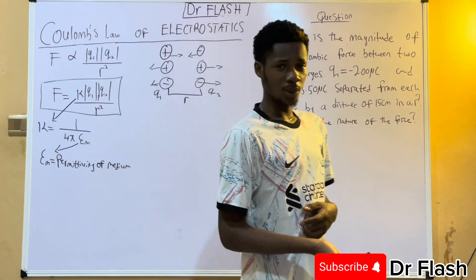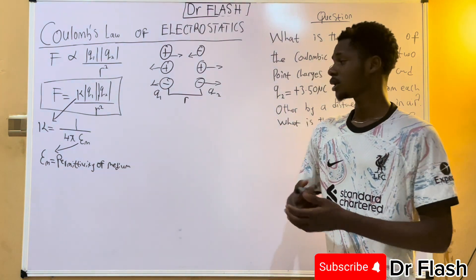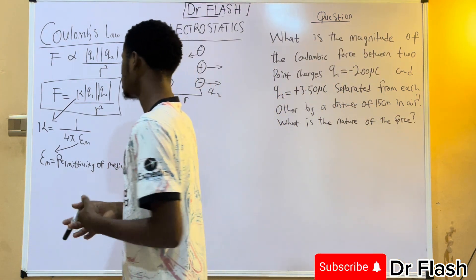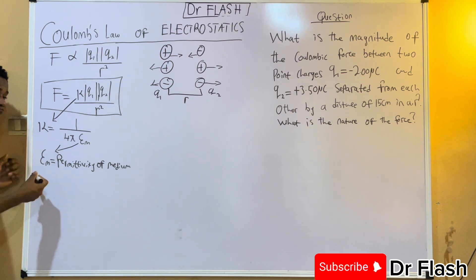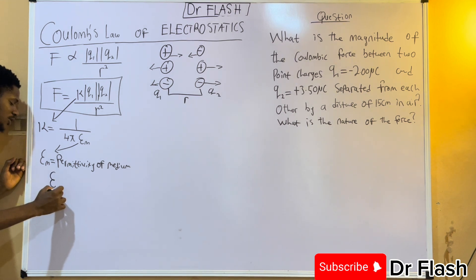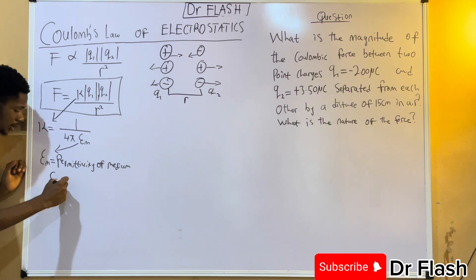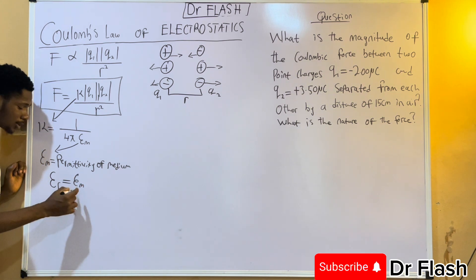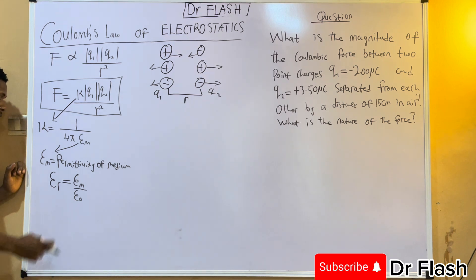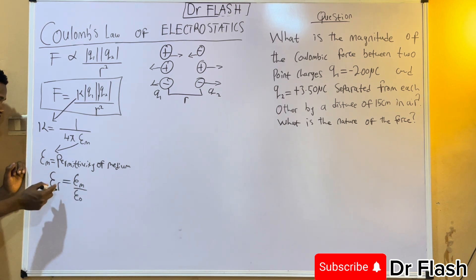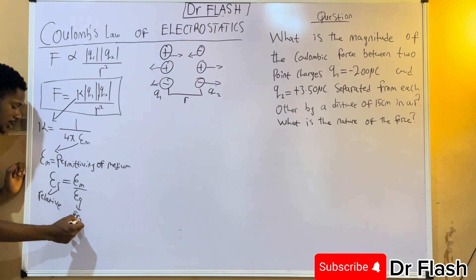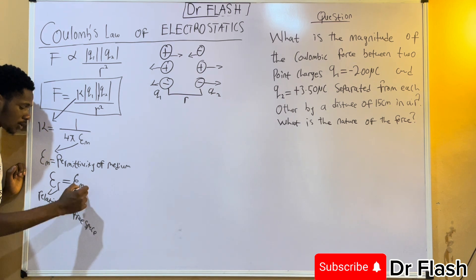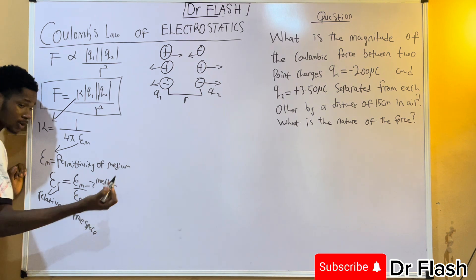In the science world, we often measure properties of a medium with respect to a reference — just as we have relative density, relative velocity, and refractive index. Similarly, the permittivity of a medium can be measured relative to another. We call this the relative permittivity, written as εr, which equals the permittivity of the medium divided by the permittivity of free space: εr = εm / ε₀. The subscript 'r' is relative, '0' is for free space or vacuum, and 'm' is for the medium.